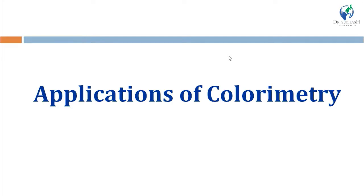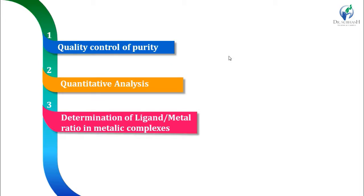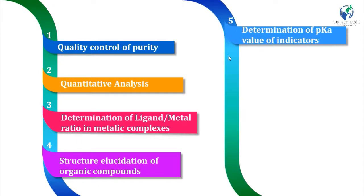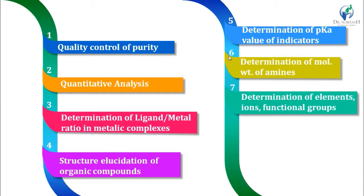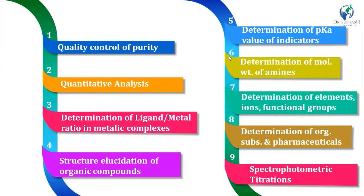Now moving towards applications of colorimetry. The applications are: first, quality control of purity (qualitative analysis); second, quantitative analysis; third, determination of ligand-metal ratio in metallic complexes; fourth, structure elucidation of organic compounds; fifth, determination of dissociation constant (pKa value) of indicators; sixth, determination of molecular weight of amines; seventh, determination of elements, ions, and functional groups; eighth, determination of organic substances and pharmaceuticals; and ninth, spectrophotometric titrations. Most of these applications also apply to UV determination.